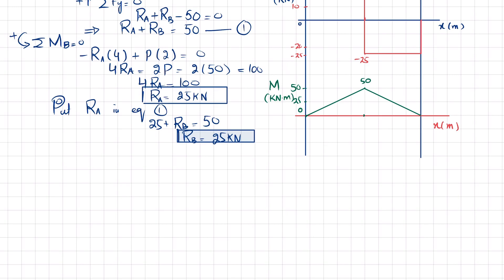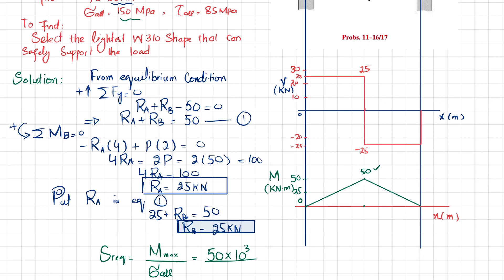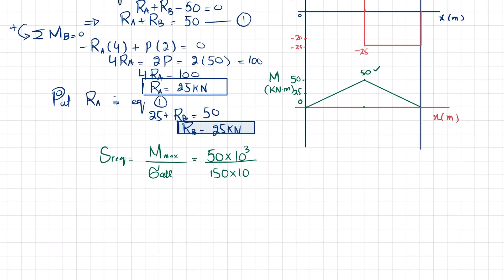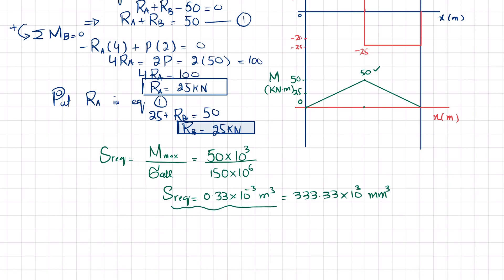We must choose the most economical section. The required section modulus is: S_req equals M_max divided by the allowable bending stress. The maximum bending moment from the diagram is 50 kN·m, so: S_req equals (50×10³) divided by (150×10⁶) equals 0.333×10⁻³ cubic meters, which equals 333.3×10³ cubic millimeters.